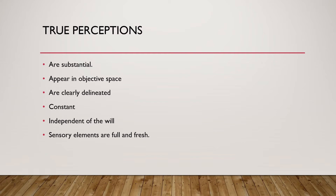True perceptions are substantial and tangible — you can feel them, they are real, you can touch them, other people can perceive them too. They appear in objective space, meaning outside our body. They are clearly delineated with a clear boundary, and they are constant — the object is still there even if I am not present, and it can be perceived by other people. It is independent of the will — it is not in my control to bring that image whenever I want. And sensory elements are full and fresh, meaning there is a feeling of a real object outside.